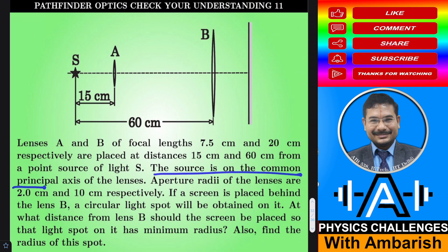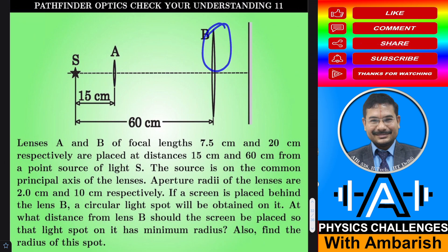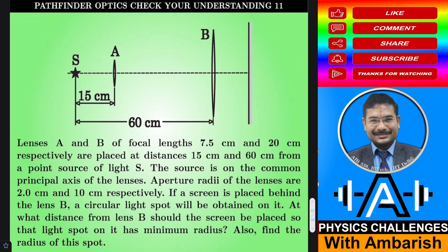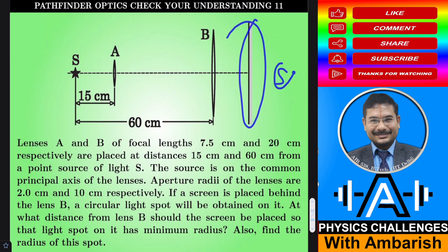The source is on the common principal axis of the lenses. The aperture radii of the lenses are 2 centimeter and 10 centimeter respectively. The aperture diameter of lens A is 4 centimeter. The aperture radius of the second lens is 10 centimeter. If a screen is placed behind lens B, a circular light spot will be obtained. At what distance from lens B should a screen be placed so that the light spot has minimum radius? Also find the radius of this spot.